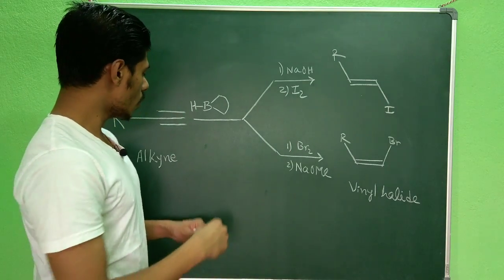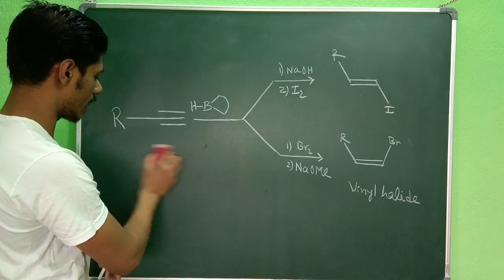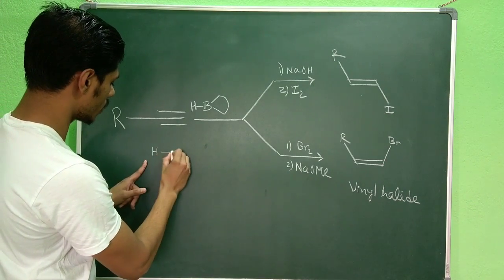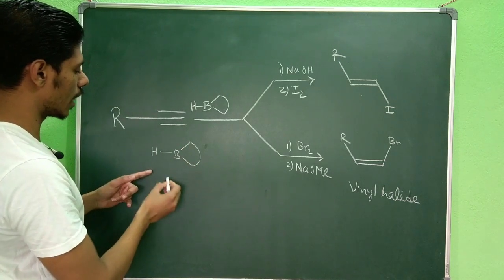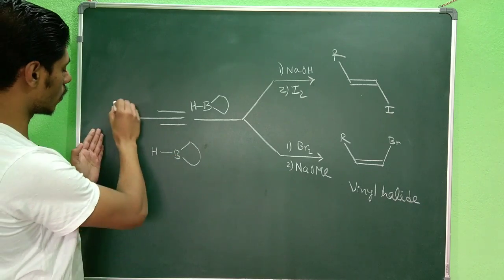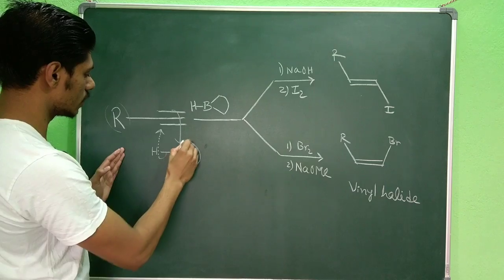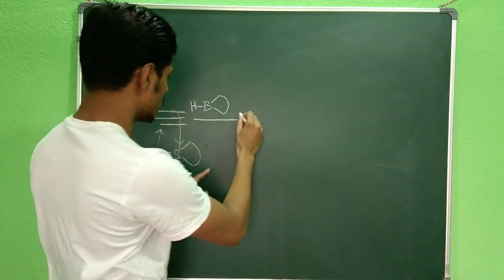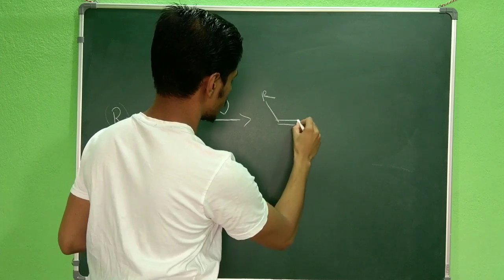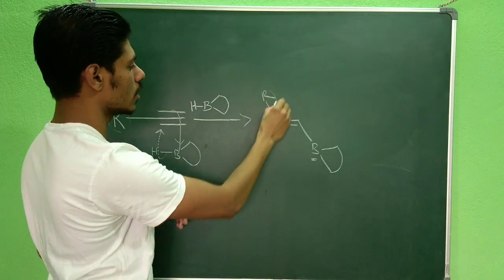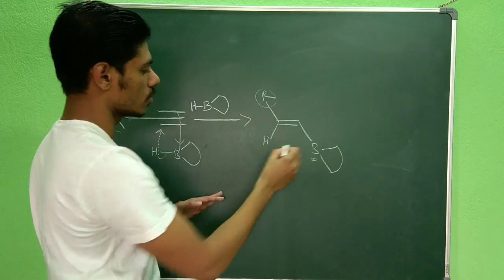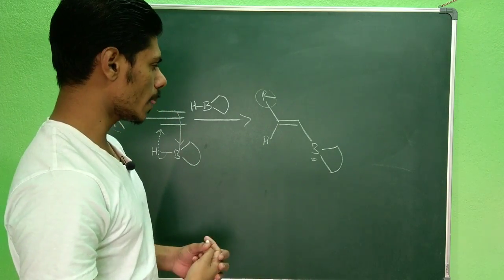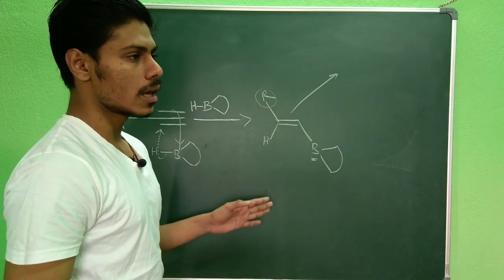You all know the hydroboration reaction — it is a simple, elementary reaction covered at the BSc level. When this alkyne undergoes hydroboration with a bulky boron hydride, the boron arranges itself away from the R group. You get this intermediate as the first-step product, where the boron and the R group are trans to one another. This hydrogen and boron addition is stereospecific — hydroboration is a stereospecific reaction.